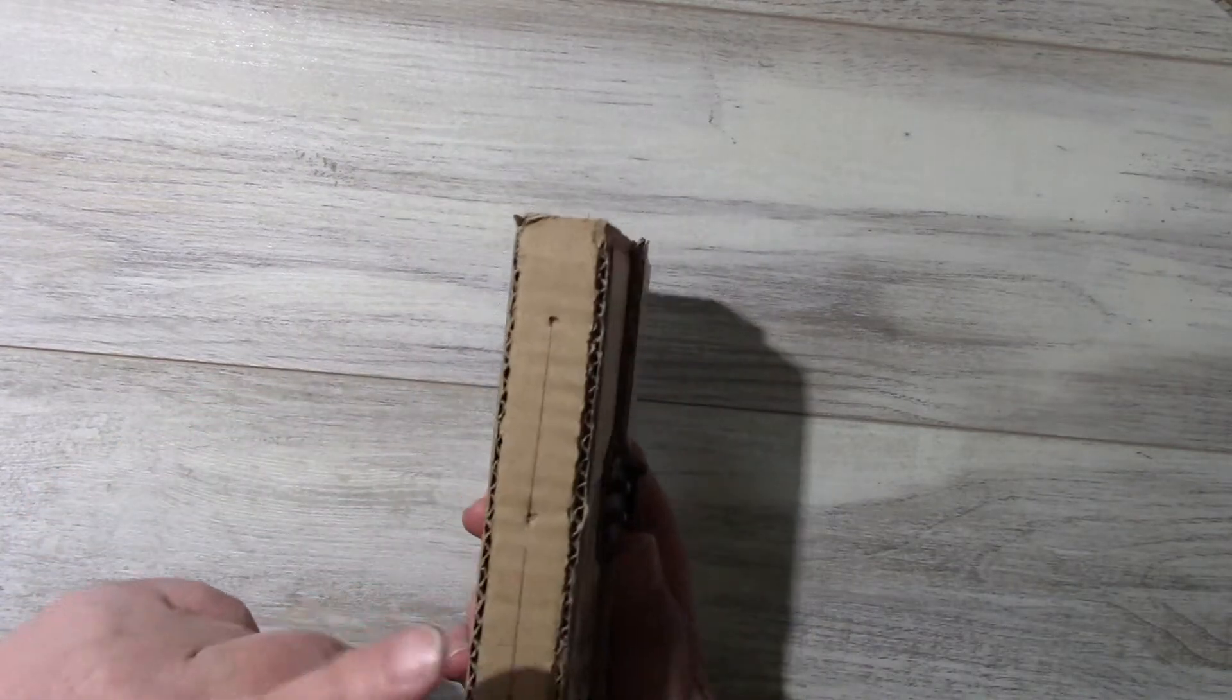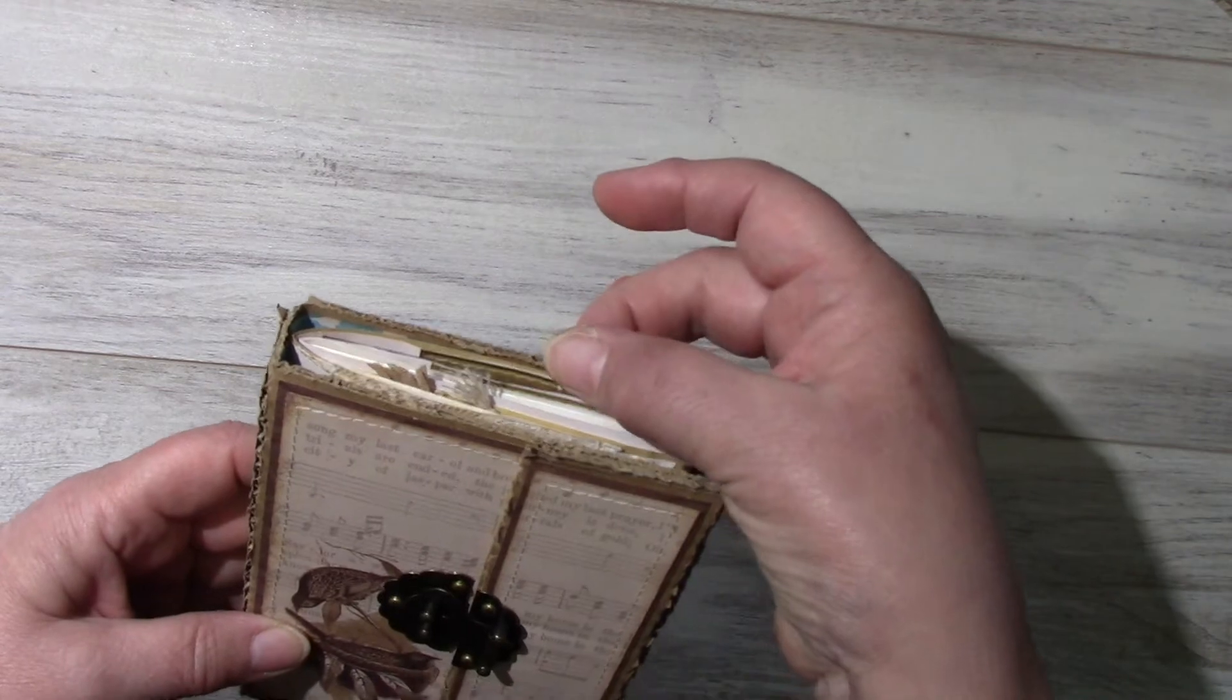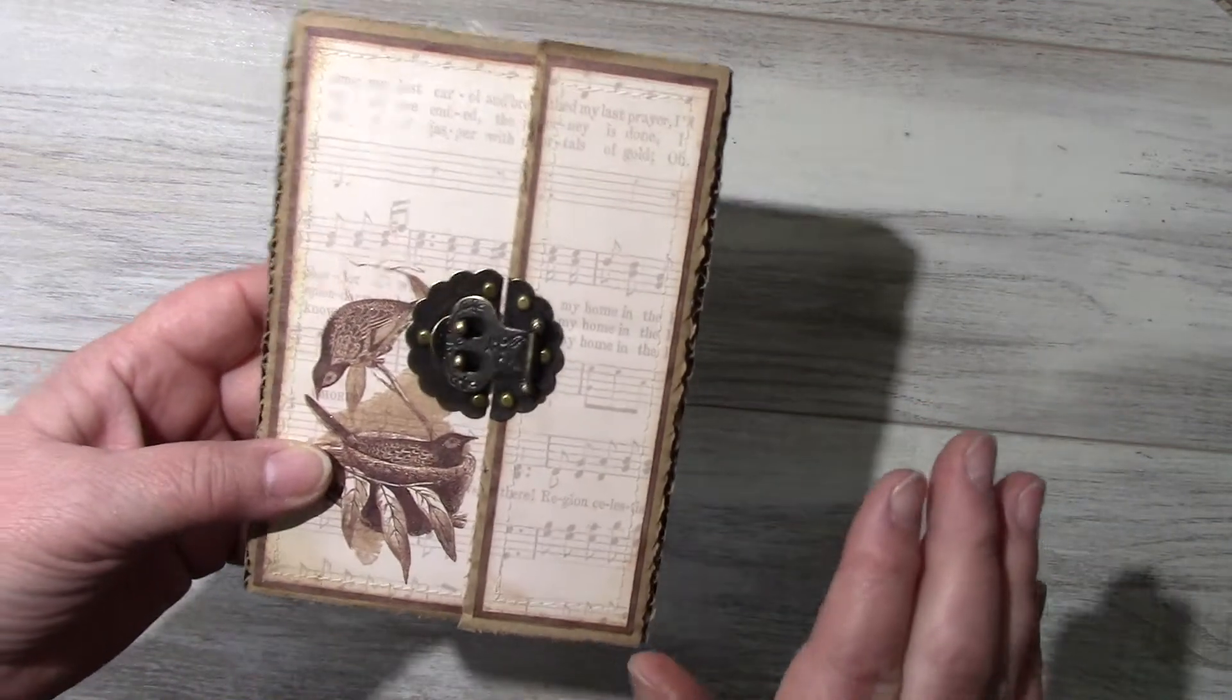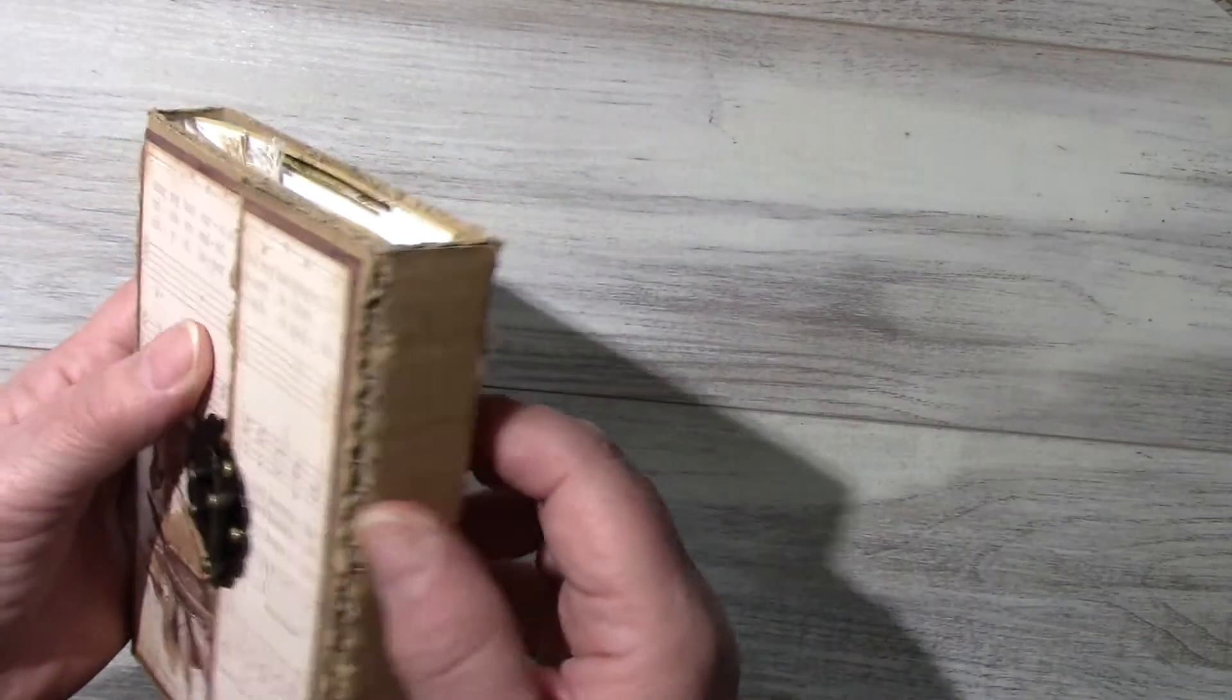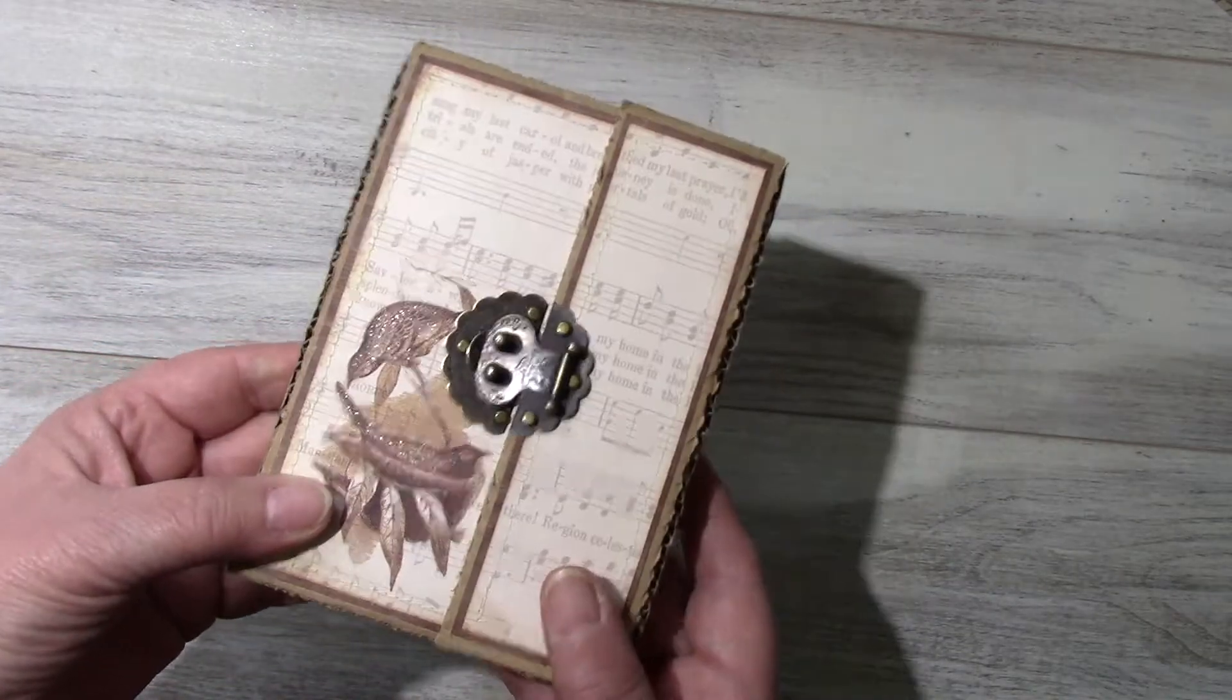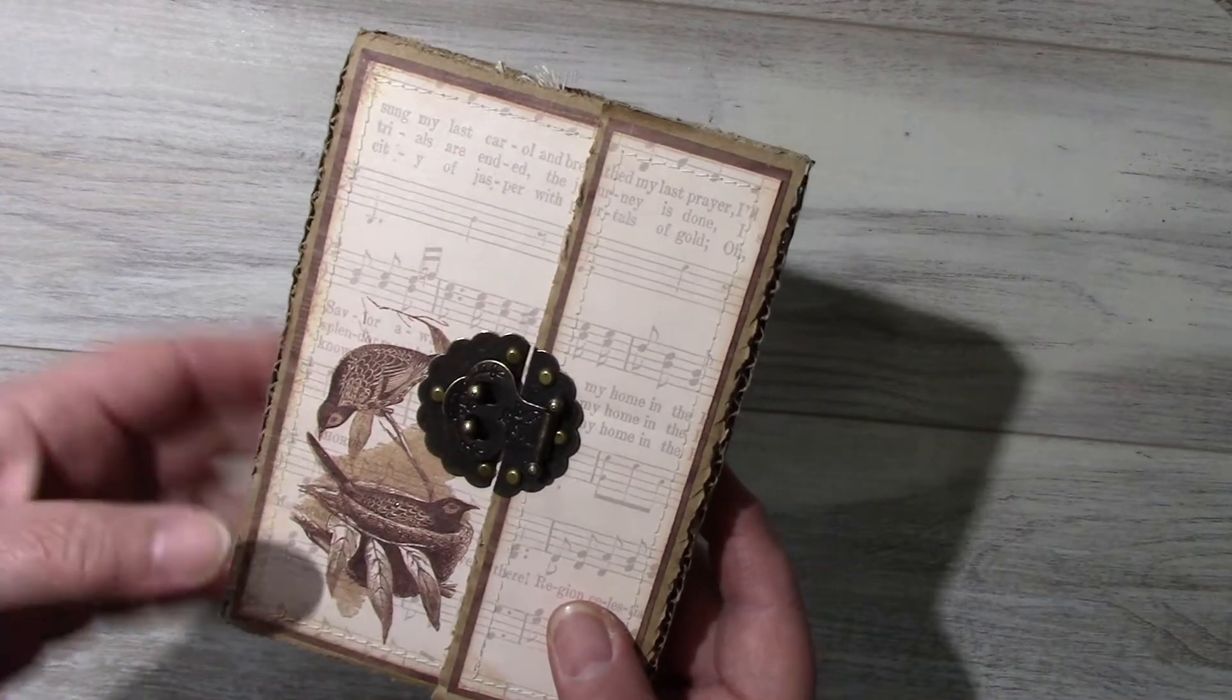The inside of the corrugated cardboard has a full page of Tyvek type paper so it won't tear any further. The edges here may fray a little bit, but it makes it look vintage. I put ink on the two birds.